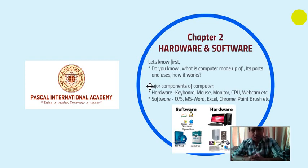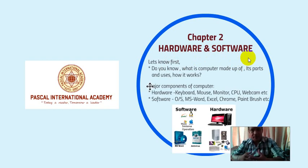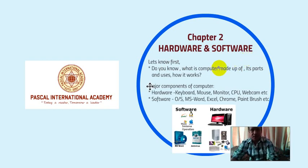In Chapter 2, starting today, we are talking about hardware and software. Most of you already know what hardware and software are, but we'll talk about them in detail. Before starting Chapter 2, the first thing you should know is what a computer is made up of — what are the components and parts that make the computer, their uses, and how each individual part works.